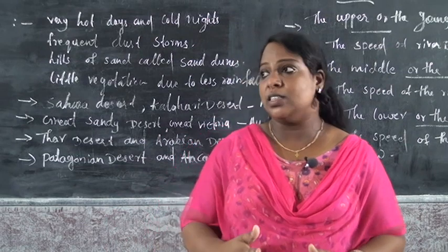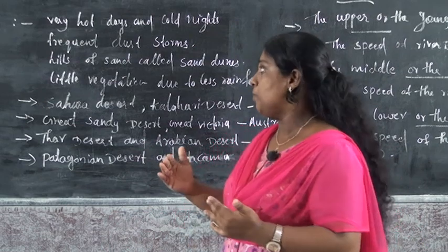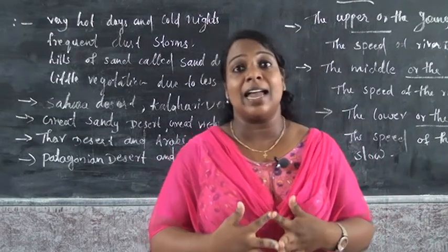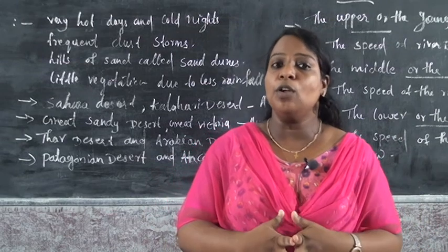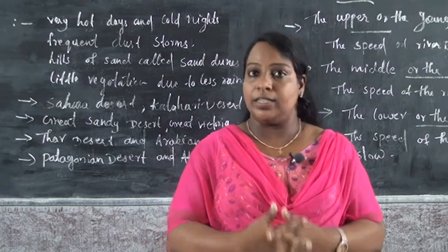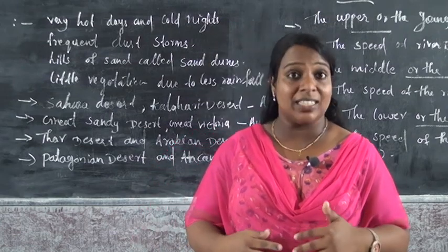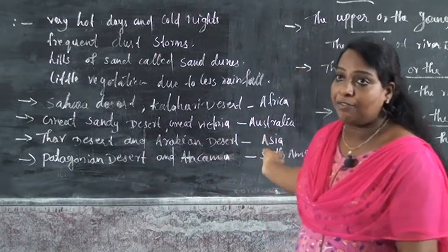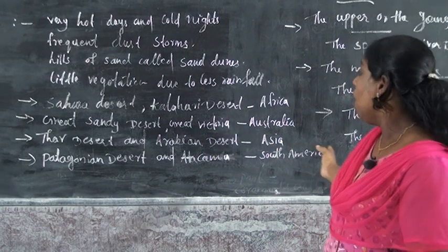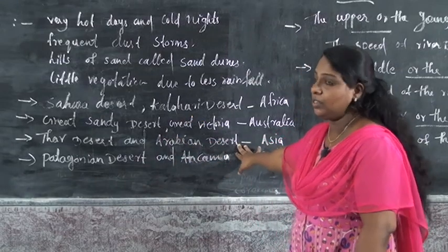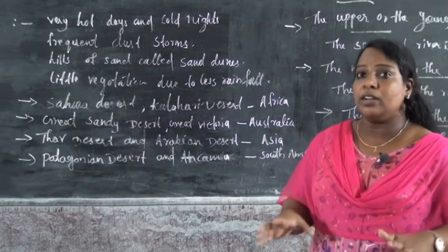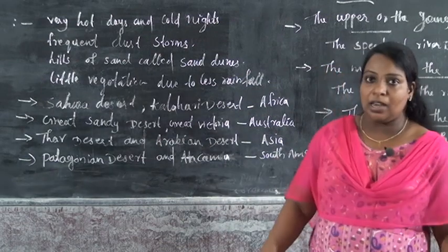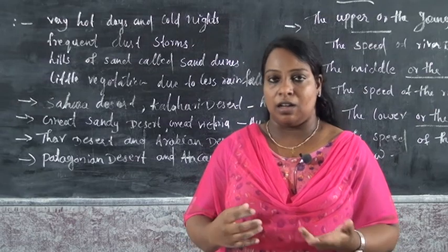The features of desert are: very hot days and cold nights, frequent dust storms, hills of sand called sand dunes, and little vegetation due to less rainfall. Examples of famous deserts: the Sahara and Kalahari deserts in Africa; the Great Sandy Desert and Great Victoria Desert in Australia; the Arabian Desert in Asia; the Thar Desert in Asia; and the Patagonian and Atacama deserts in South America.